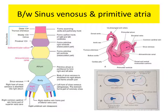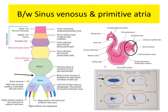Now between the sinus venosus and the primitive atria, shown by the arrow at this place, the following changes start happening. Initially, the sinoatrial orifice is wide and oval. Next, it becomes slit-like and starts shifting towards the right side. Now it is totally towards the right side and finally it becomes a small opening. There is a right venous wall, left venous wall, and at the apical part they are united together by the septum spurium.